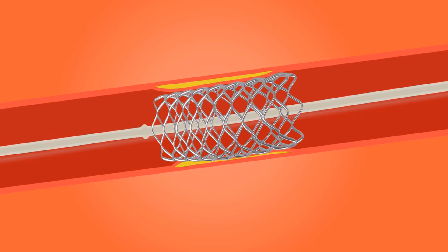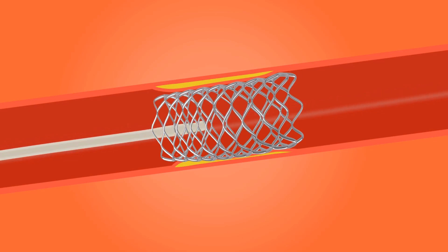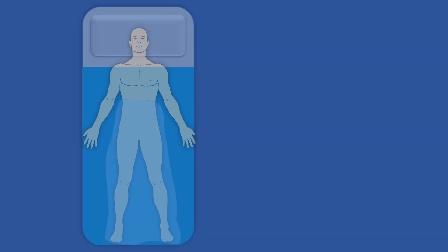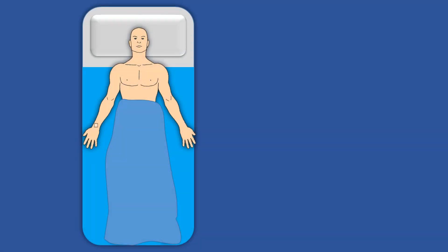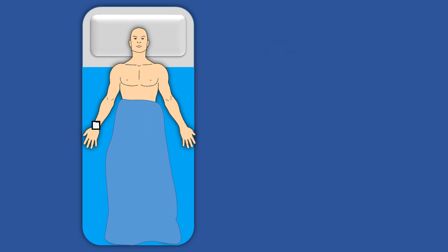The angioplasty procedure can be repeated in case of multiple blockages. After the procedure, a pressure bandage is placed on the radial artery to stop bleeding. The patient lays down for about three to four hours, and signs of bleeding and chest pain are monitored.